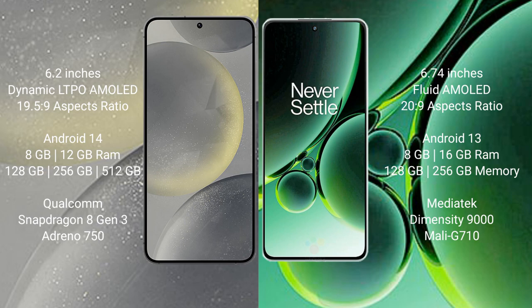Samsung Galaxy S24 comes with 8GB and 12GB RAM, and 128GB, 256GB, and 512GB internal storage, powered by the Qualcomm Snapdragon 8 Gen 3 processor with Adreno GPU.